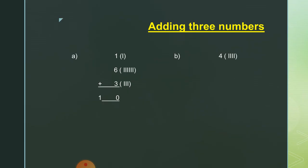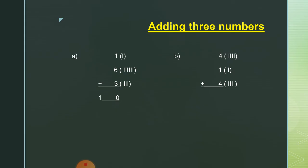Same here: four plus one plus four — three numbers. In front of four we draw four lines, in front of one we draw one line, and in front of four we draw four lines again. Counting: one, two, three, four, five, six, seven, eight, nine — the answer is nine. This is the way we do addition.